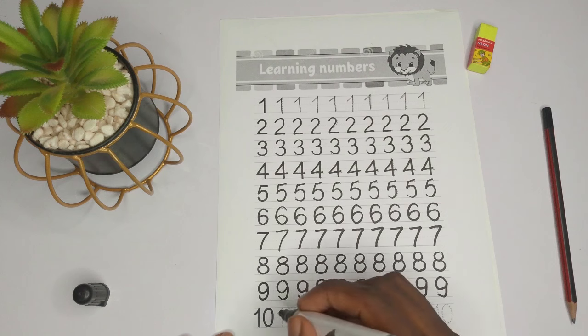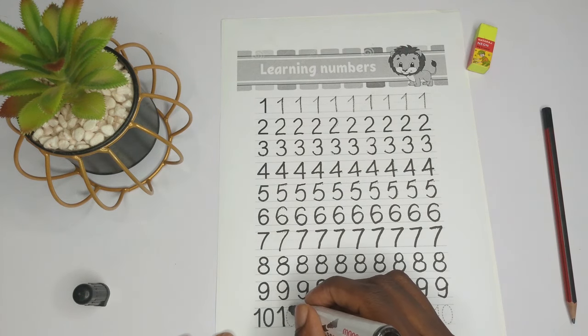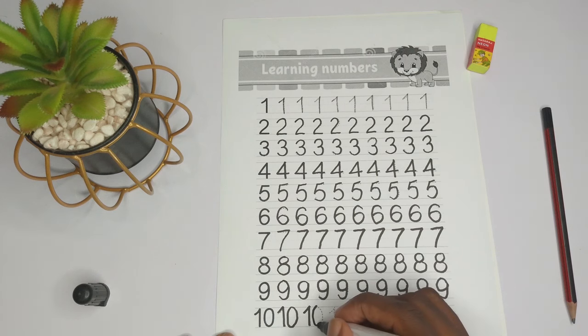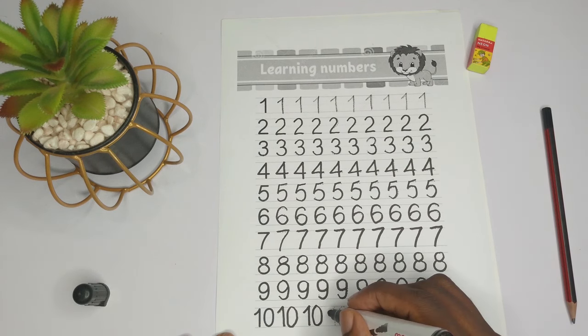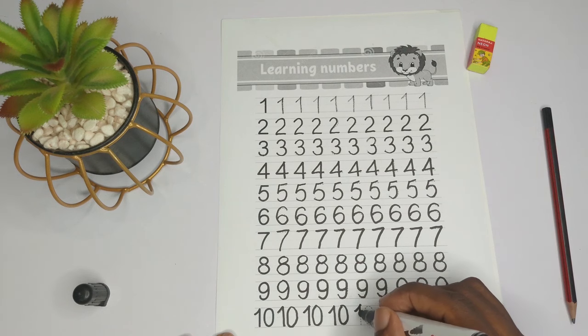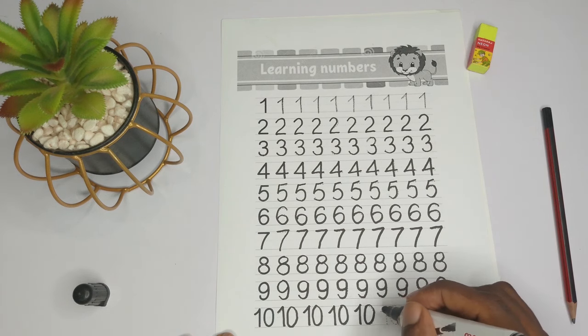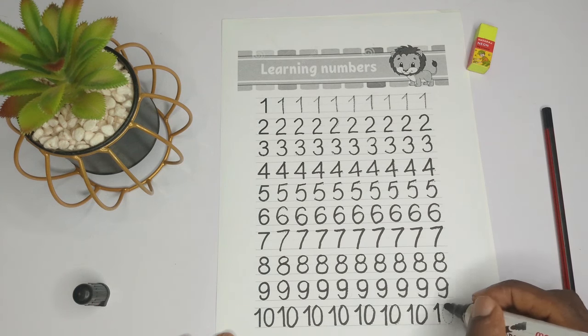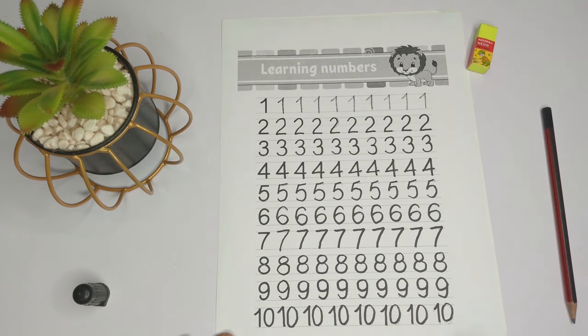And lastly, ten, which is one and zero. One and zero. Okay, so we maintain that: one, zero, one, zero, one, zero. Very good, good job.